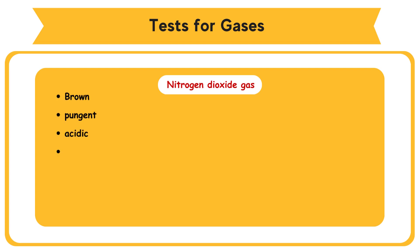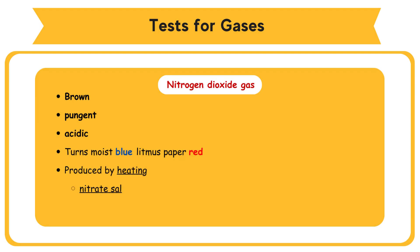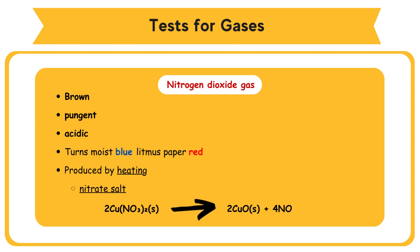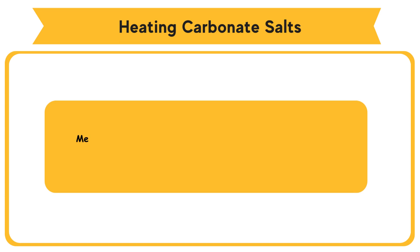Nitrogen dioxide gas is brown, pungent, and acidic. It turns moist blue litmus paper red. It is produced by heating a nitrate salt: 2Cu(NO3)2 (solid) → 2CuO (solid) + 4NO2 (gas) + O2 (gas).